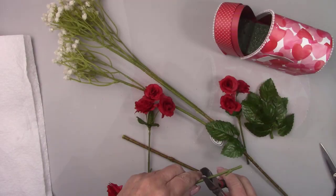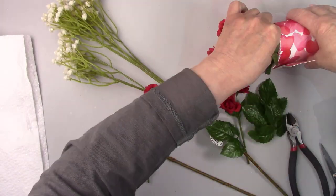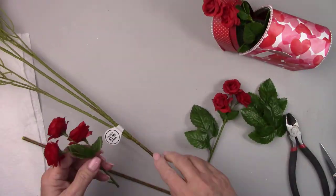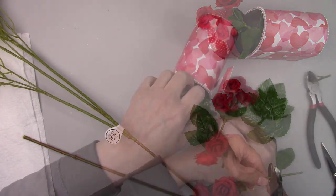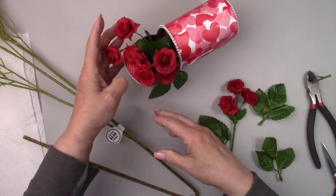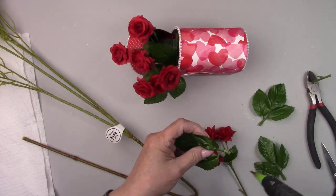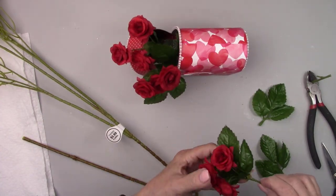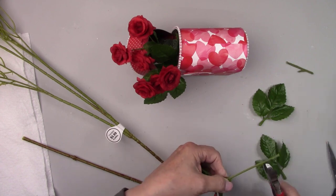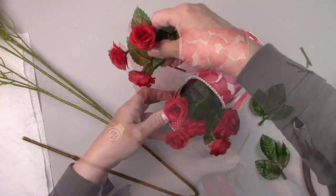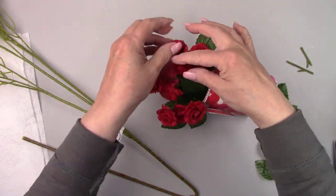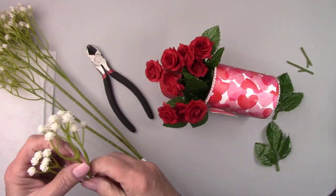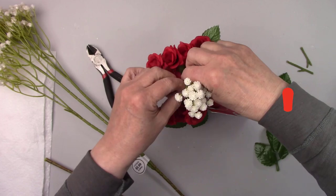I'm adding some tiny red roses that I got at Dollar Tree, some leaves, and baby's breath. Everything I'm using today for this project is in my description box below.